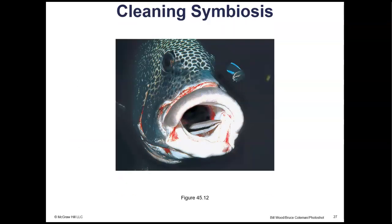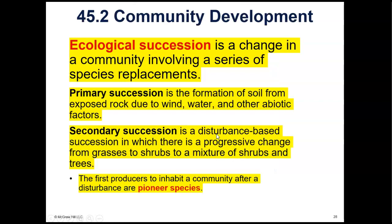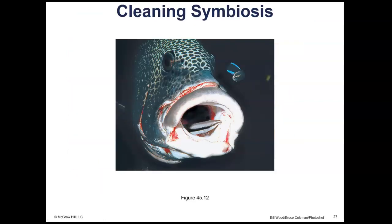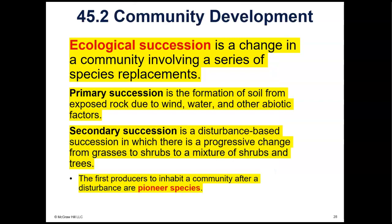We also have fish that have other fish that clean them, which is a symbiosis because one gets cleaned and the other gets food. So there are a lot of examples of symbiosis in nature — too many to name — but flowers and their pollinators are probably the best example of mutualism.